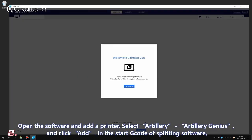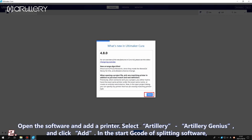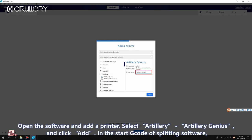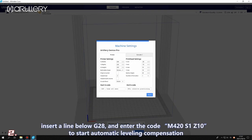Open the software and add a printer. Select Artillery, Artillery Genius, and click Add in the start code of slicing software. Insert a line below G28 and enter the code M420S1 to start automatic leveling compensation.